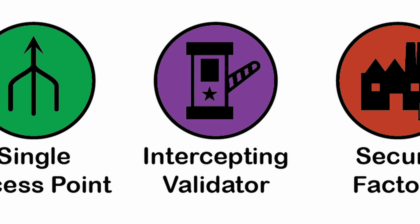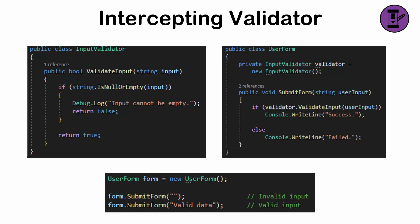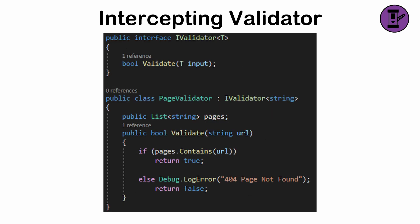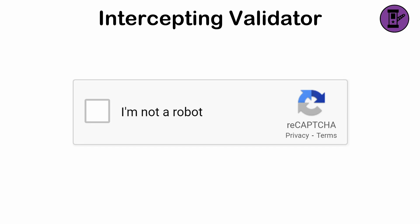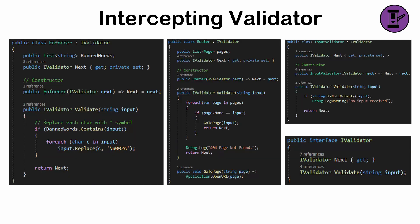Intercepting Validator is a pattern where filters intercept requests or responses to validate, modify, or block them. Filters, such as guard clauses or middleware, can check conditions, sanitize inputs, or apply security policies. These can be chained together to enforce rules, route requests, or handle exceptions without altering the underlying logic.